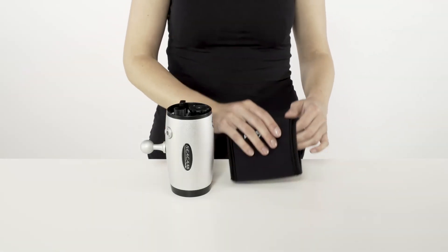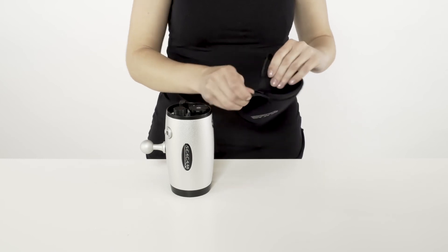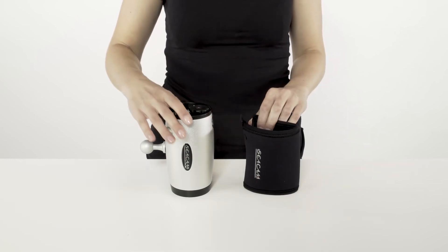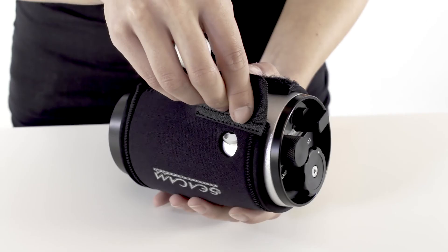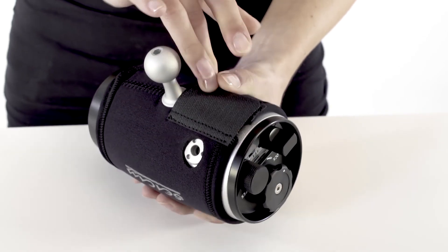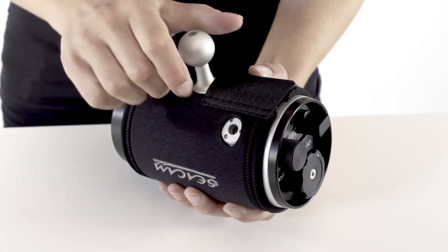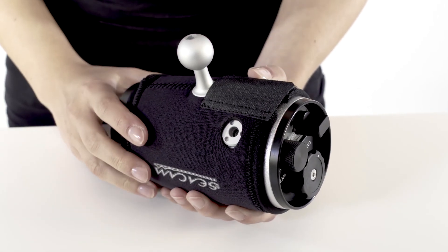Open the Velcro fastener of the neoprene cover and set it down with the opening facing upward. Now insert the flash from above and close the fastener. Adjust the cover in a way that the cable connection and the ball match the cutouts.